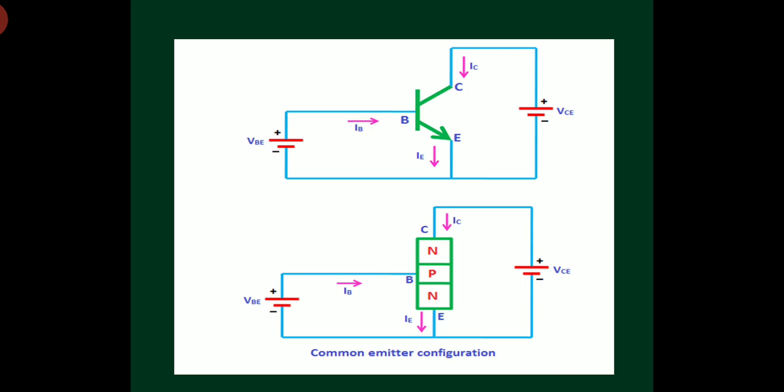There is a circuit diagram and schematic where the emitter is common and grounded. In a transistor there are three regions: emitter, base, and collector. Emitter is highly doped, base is lightly doped, and collector is moderately doped. The width of emitter is high, the width of base is very, very less, and the width of collector is much greater than the emitter region width.